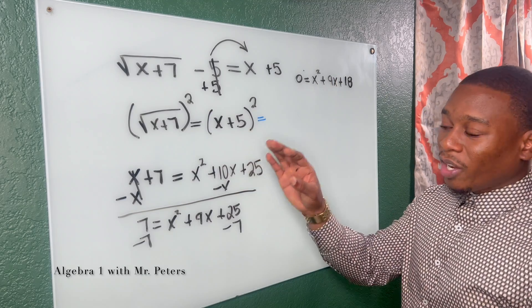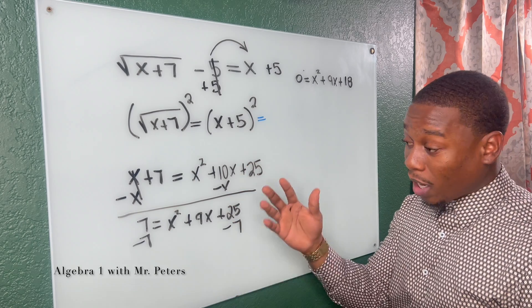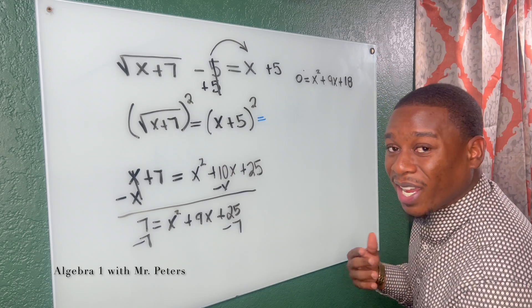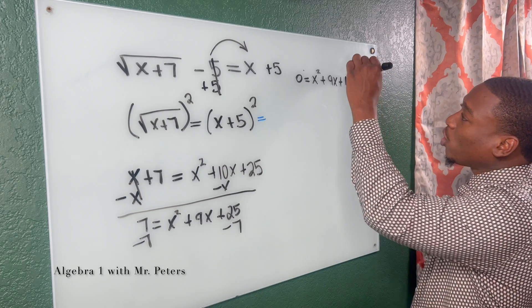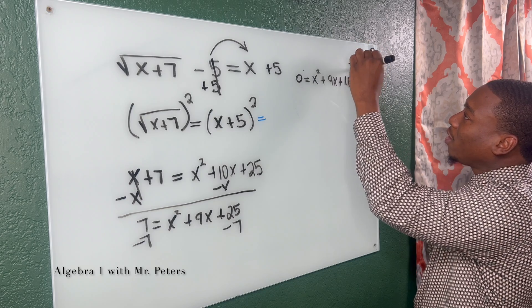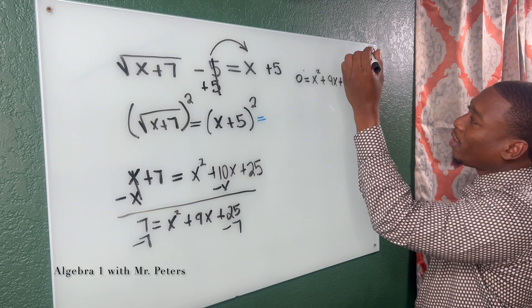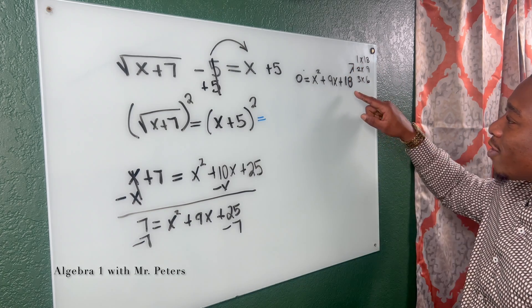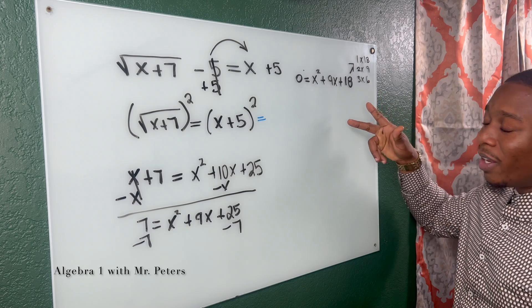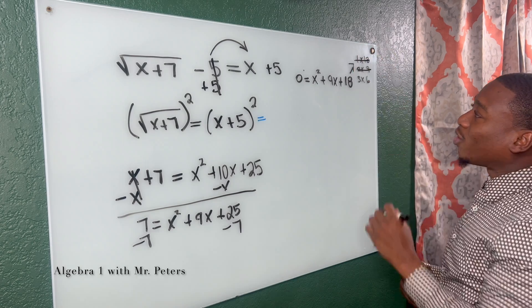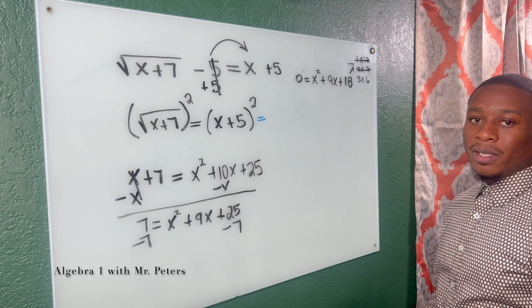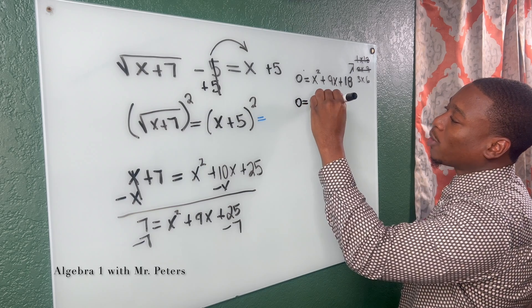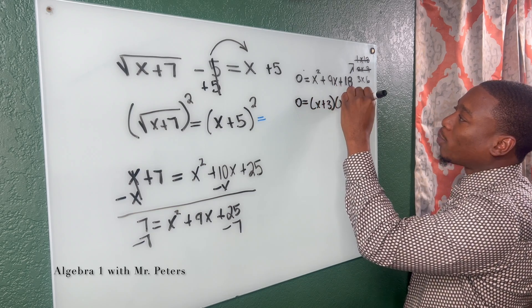So now we solve the quadratic. We got rid of the radical, but now our equation turned into a quadratic equation and we have to factor. So this is when we write out our factors, right? One times 18, two times nine, three times six. So we're looking for something that when we multiply, it gives us 18. When we add, it gives us nine. We know it's not one and 18. I know it's not two and nine. So it has to be three and six. So zero is equal to X plus three multiplied by X plus six.